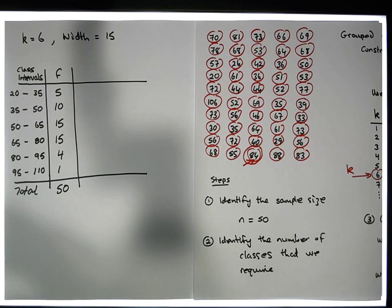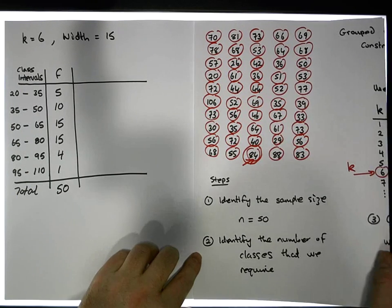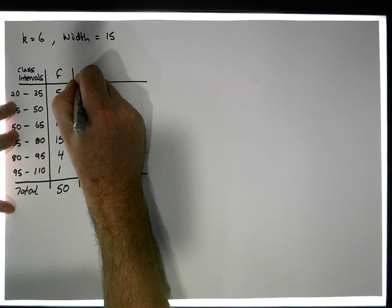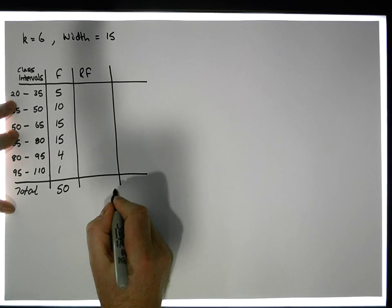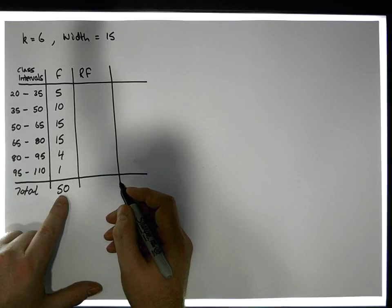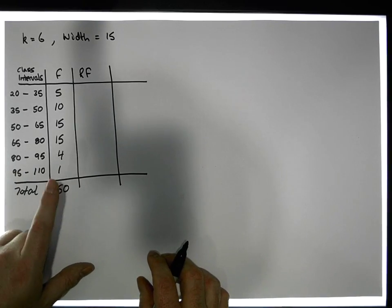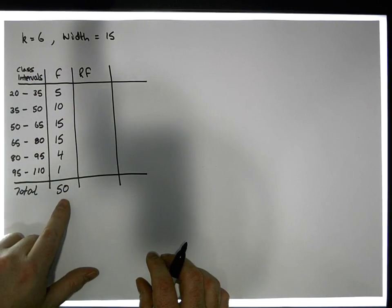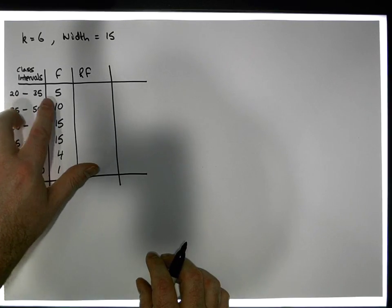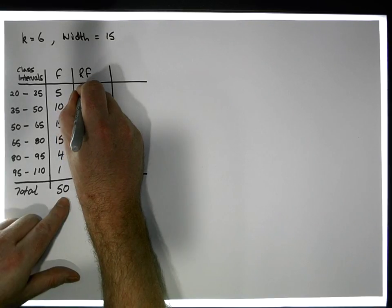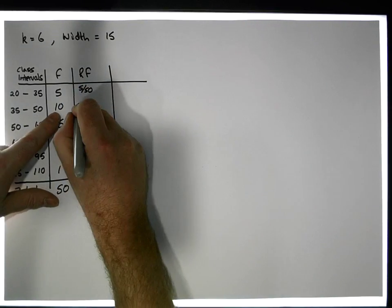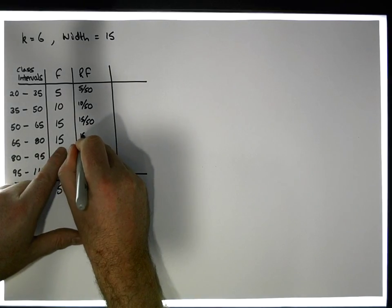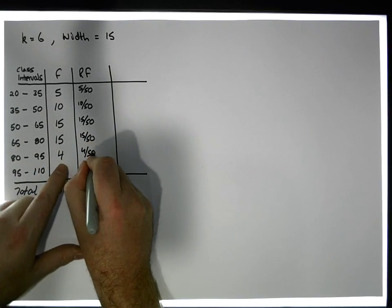We've now constructed our frequency distribution. We can also construct relative frequency distributions — small f — which express frequencies relative to the total as fractional amounts. Think of our 50 observations as a pie with 50 slices. The first interval has 5/50ths, the second 10/50ths, then 15/50ths, another 15/50ths, then 4/50ths, and finally 1/50th.